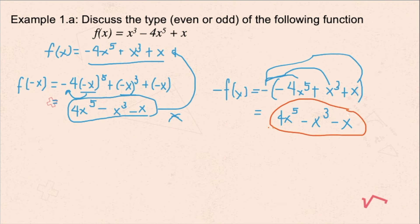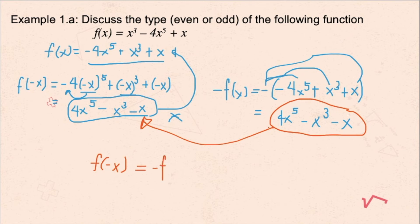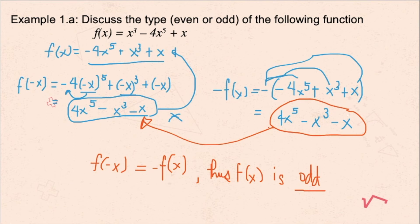So negative f(x) is 4x⁵ - x³ - x. Comparing: is negative f(x) equal to f(-x)? Yes, it is clear that they are equal. Since f(-x) equals negative f(x), we can say that the given f(x) is an odd function.